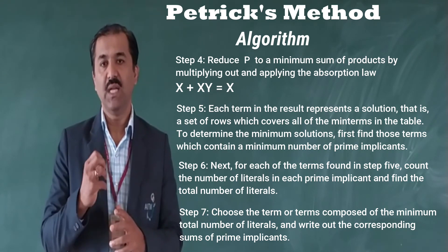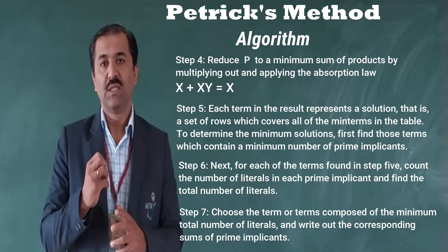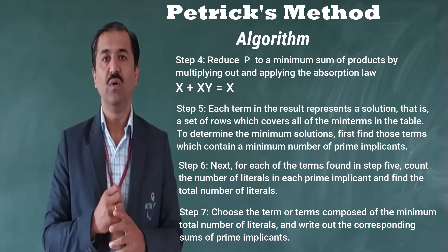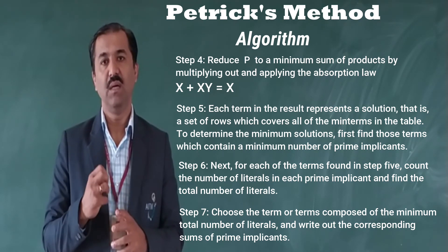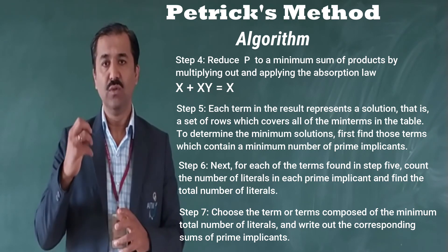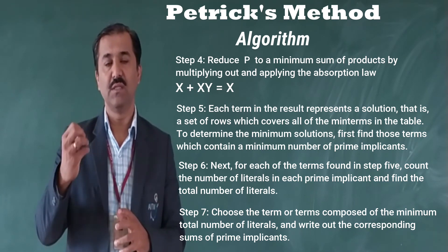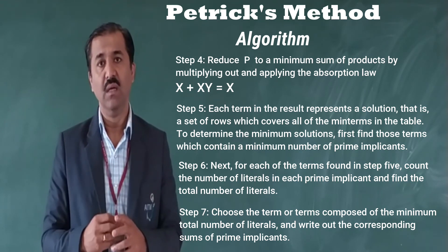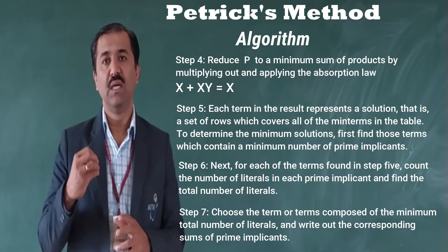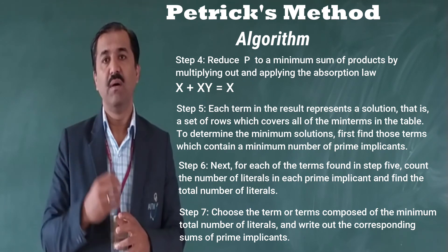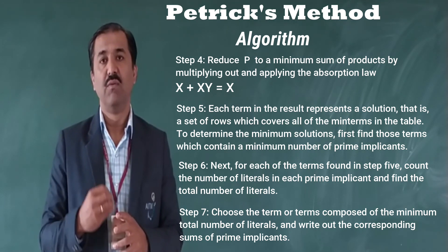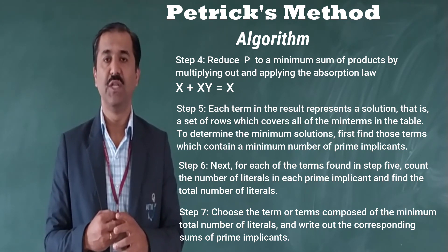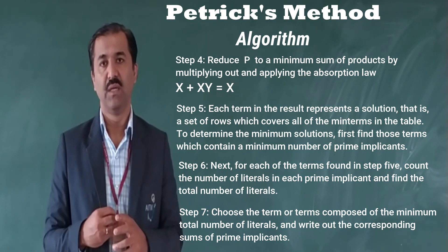So these are some of the steps that we follow in determining the Petrick's method. These 7 steps we are going to apply in determining the minimum functions for a given boolean function using Petrick's method.